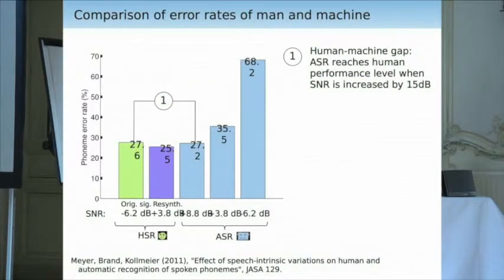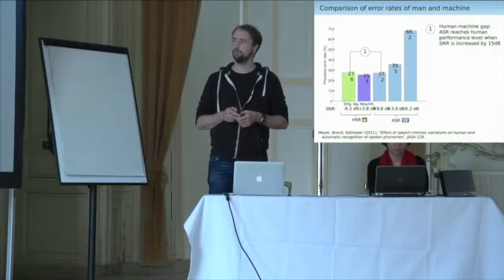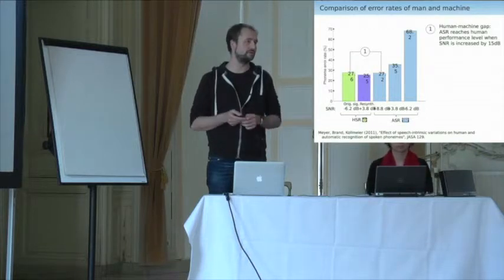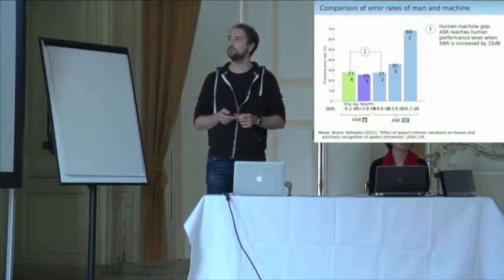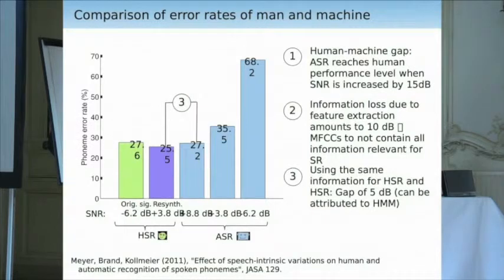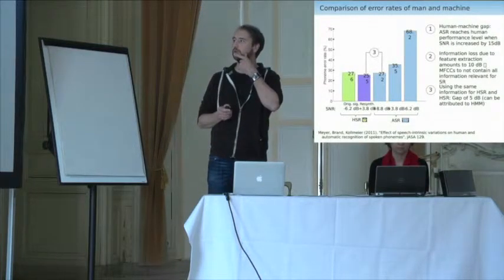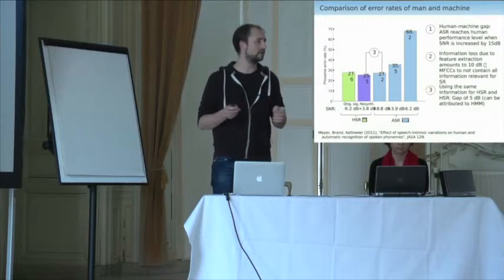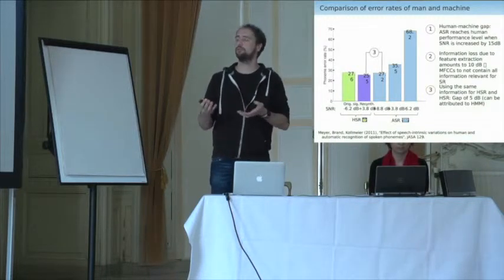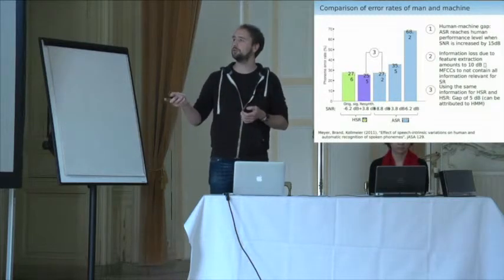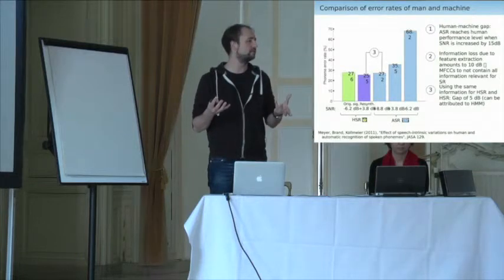Secondly, we can see that the information loss due to feature extraction amounts to 10 dB. In this scenario, MFCCs do not contain all of the information relevant for speech recognition. Comparing scores from resynthesized signals with ASR, we can conclude for this phoneme recognition task that using the same information for human listeners and ASR, there's still a gap of 5 dB, which can be associated with imperfect backends.